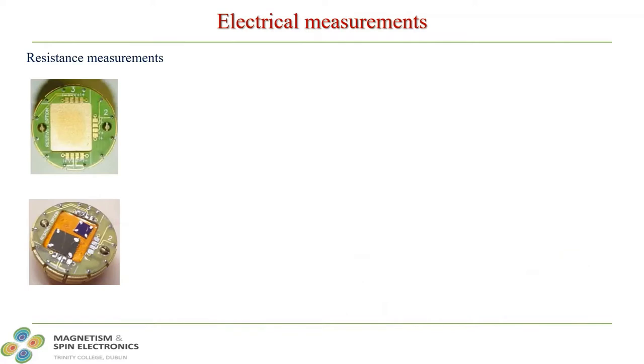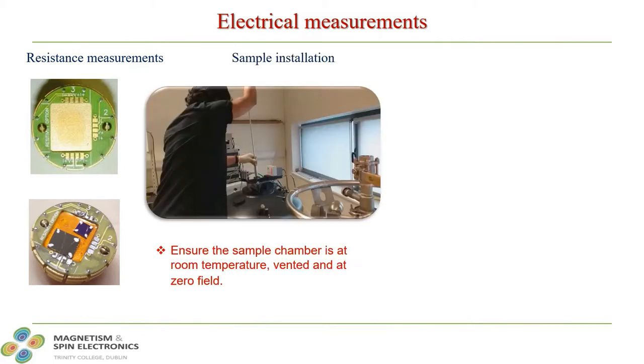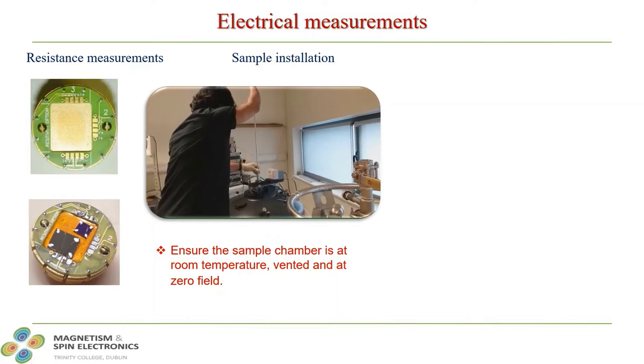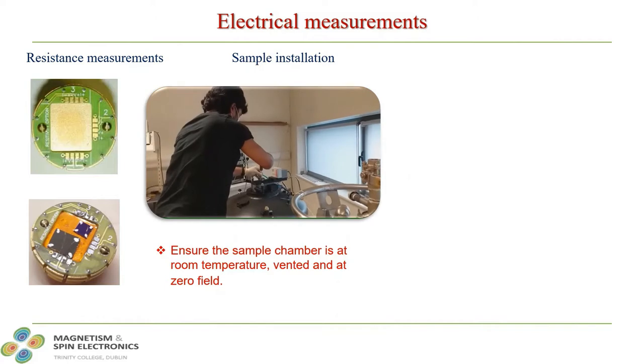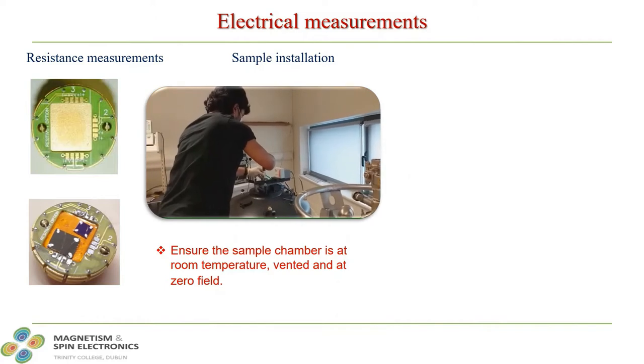First, the electrical measurement. The standard resistance of the sample can be measured by mounting the sample on a 3-channel resistive puck. It allows us to measure 3 samples simultaneously. As shown below, 2 samples have been configured to simultaneously measure the anomalous Hall effect in the thin film sample.